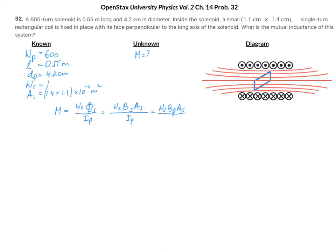We divide that by the current in the primary. So the mutual inductance is going to be the number of turns in the secondary, times the magnetic field of the primary — which is mu-naught times n-primary times the current in the primary — times the area of the secondary, divided by the current of the primary. The current in the primary cancels out. This becomes: number of turns in the secondary, times mu-naught, times lowercase n sub p — which is the number of turns in the primary divided by the length of the solenoid — times the area of the secondary.